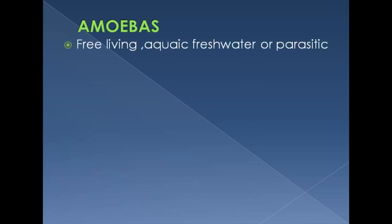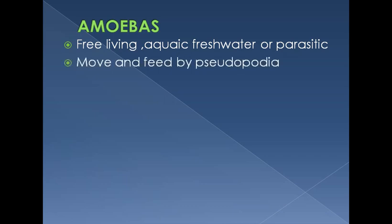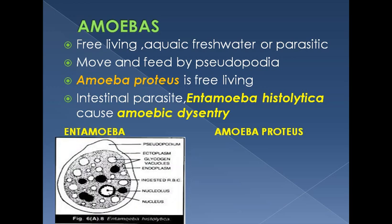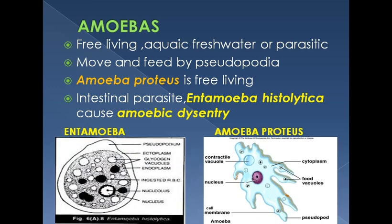All protozoans with amoeboid movement are mostly included in amoebas. They are free-living aquatic (freshwater) or some may be parasitic — as already studied about Entamoeba. They move and feed with the help of pseudopodia. Amoeba proteus is the free-living form, and Entamoeba histolytica, which causes amoebic dysentery, is the parasitic form.